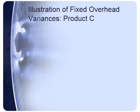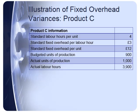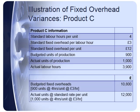Let's look at an illustration with Product C. Each product requires four standard labour hours, and overheads are being absorbed on the basis of labour hours. There's a standard fixed overhead per labour hour of £3, which means the standard fixed overhead per unit is £12 — four labour hours at £3 per hour. Our budgeted units of production were 900, but we actually made 1,000 units and used 3,900 labour hours. We can first calculate some useful numbers, beginning with the budgeted fixed overheads.